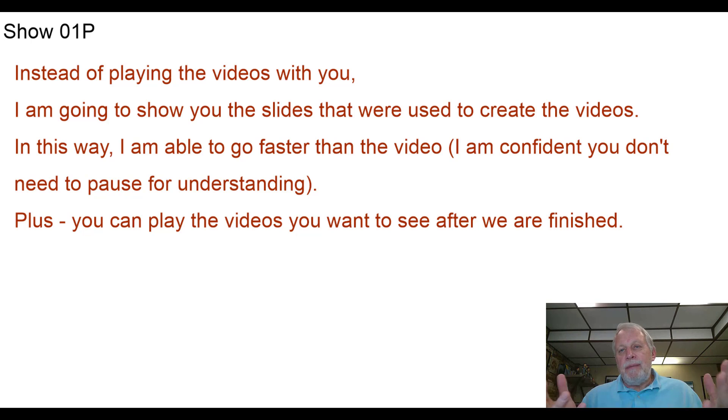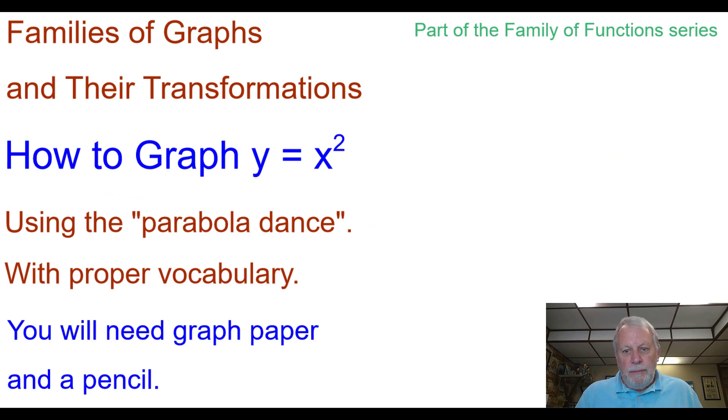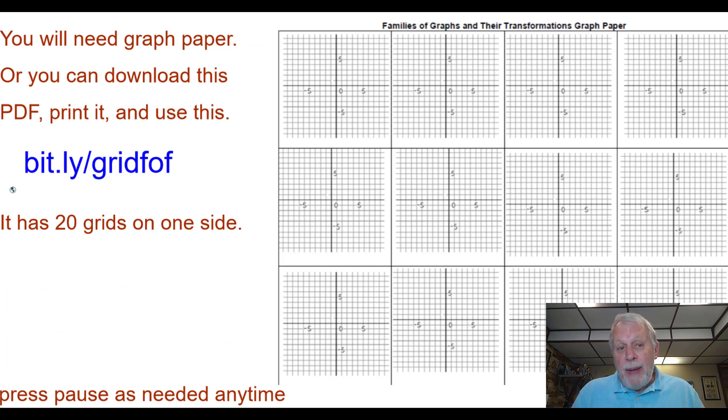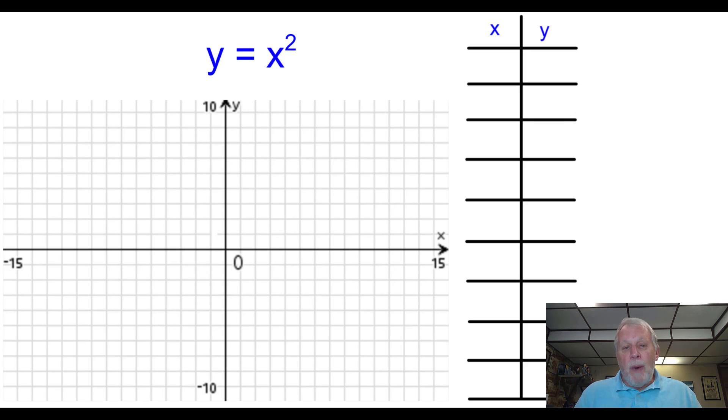So instead of playing a video for you, which I think would be kind of crummy, I'm going to show you the slides that were used to create the videos, kind of in a fast forward. They were created kind of almost like a flip book or a cartoon where you just keep flipping and changing and adding to the slides. And then plus you can play any videos you want to see what's going on after we're finished. So I'm going to show you 0, 1, P. How to graph y equals x squared, part of the family of functions series. I'll point out that you will need graph paper for this. So we start off with a grid, y equals x squared. We'll start with a table. And these are our big seven values that we usually like to use when we graph our parent functions. So 3 squared is 9. And I would tell the students to pause and complete the table. So they would pause the video, hopefully, and complete the table. Then return. And these are the values for this one.